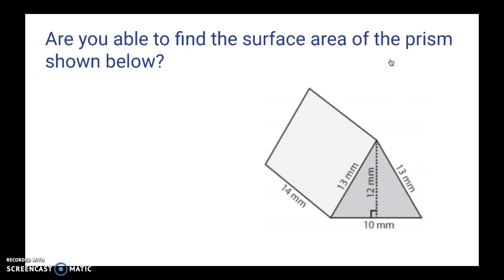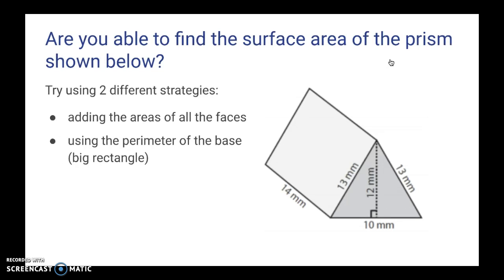So I want you to see how well you understood this lesson today and just wrap up and see if you can find the surface area of the prism shown below. And I'd like you to encourage yourself to try to confirm it using both strategies. So first, go ahead and add the areas of all the faces. And second, use the perimeter of the base, the big rectangle, and see if you get the same answer both times. So I'd like you to pause the video and then try this problem on your own and come back and see how you did.